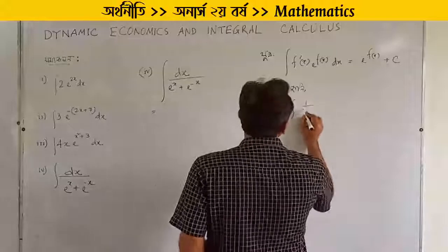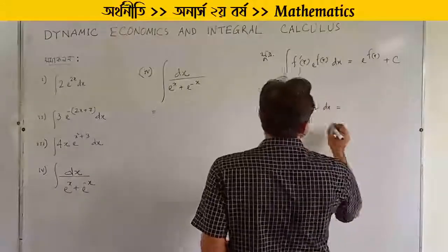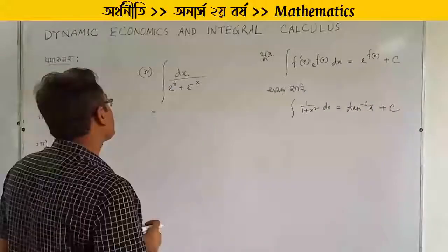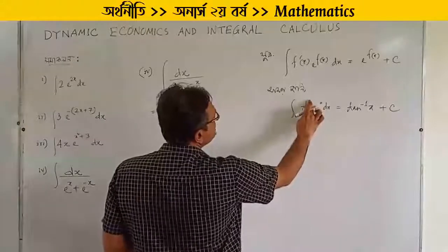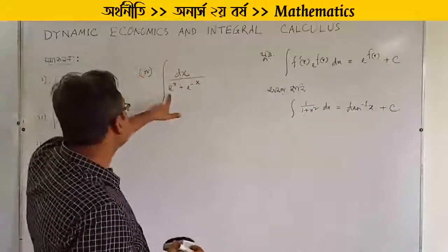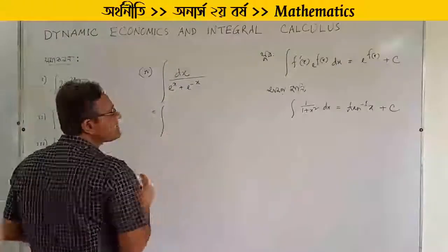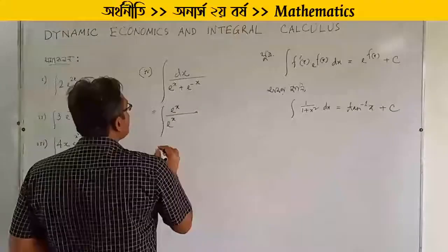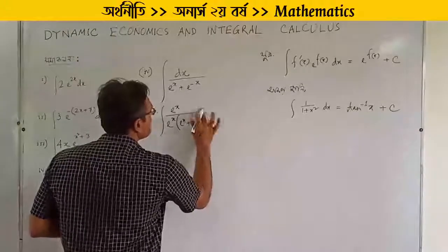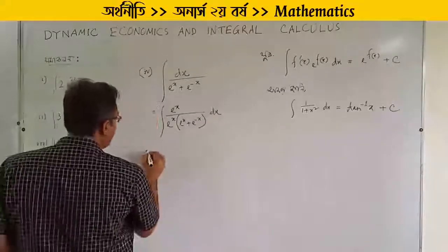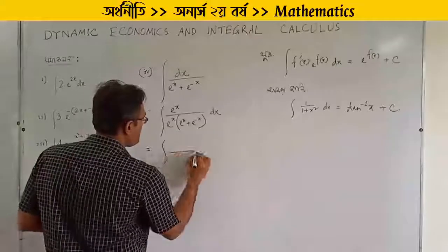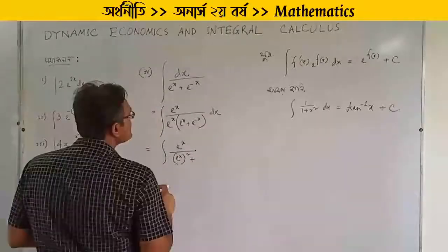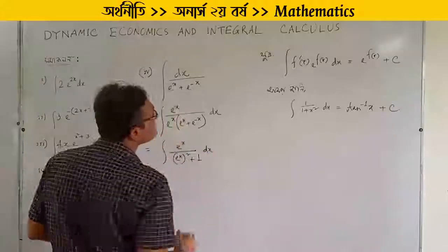The integral of 1 by 1 plus x squared dx equals arctan inverse x plus c. This standard result is useful. We can use this along with substitution.